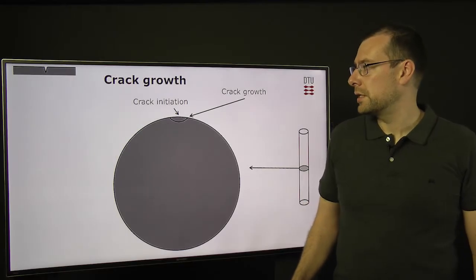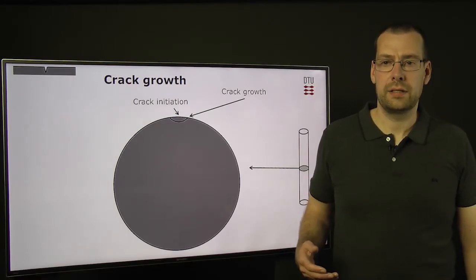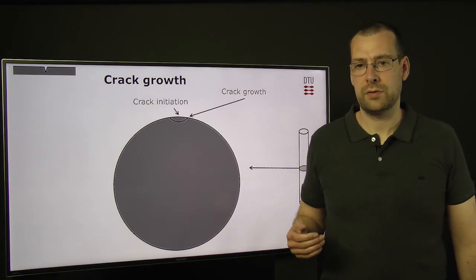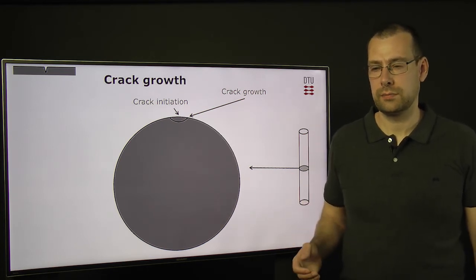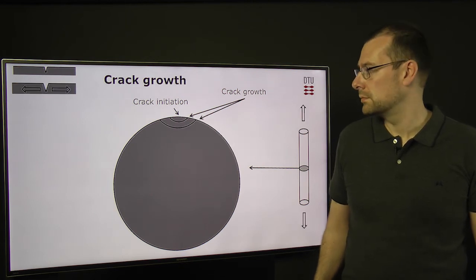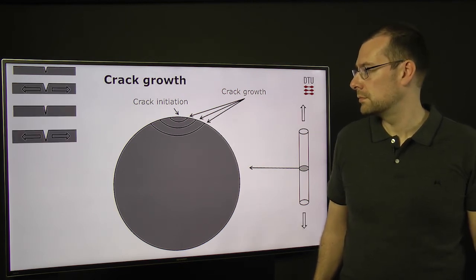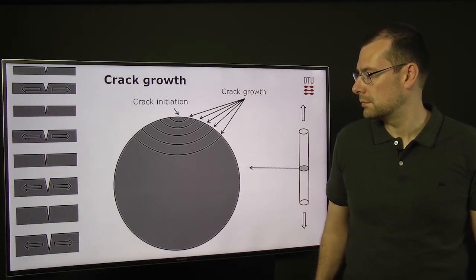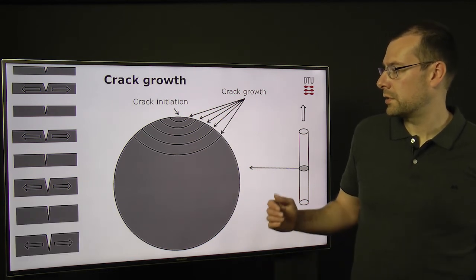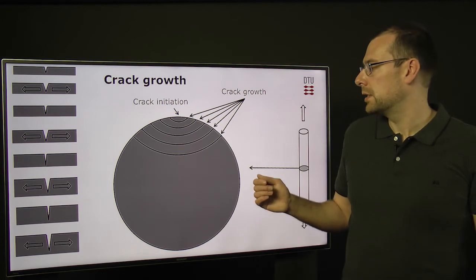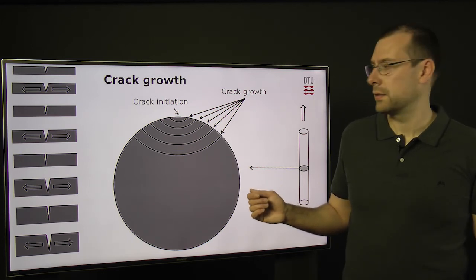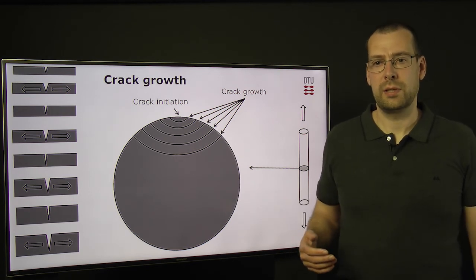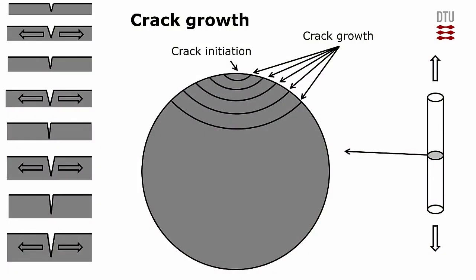When we have initiated a crack, then it will start to grow and it will grow with each cycle when the stress is at its maximum. So each time the crack grows, it will leave a mark like a ring here. And this will be visible in a microscope and it may also be visible with a naked eye.